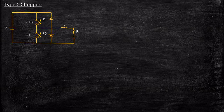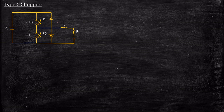On a high level, if you observe what are the major differences from previous circuits, this particular chopper has two switches — CH1 and CH2 — and two diodes comparatively. We will be analyzing the operation of the circuit in four different cases, which will make it easy to understand.